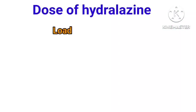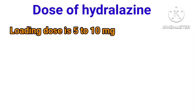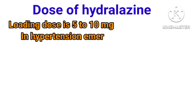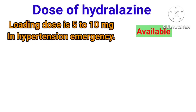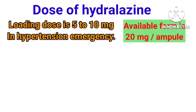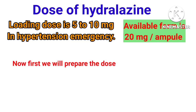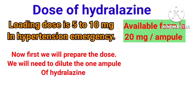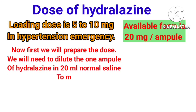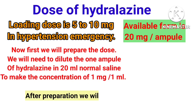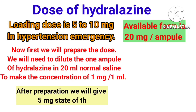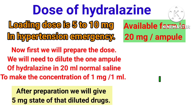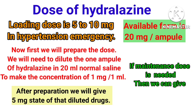Dose of hydralazine: the loading dose is 5 to 10 mg in a hypertensive emergency. The available form is 20 mg per 1 ml. To prepare the dose, dilute 1 ampoule of hydralazine in 20 ml normal saline to make a concentration of 1 mg per 1 ml. After preparation, give 5 mg of the diluted drug. If a maintenance dose is needed, then give 5 mg per hour.